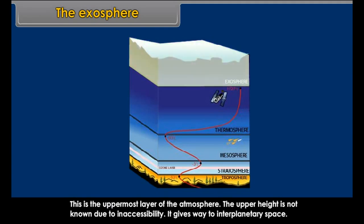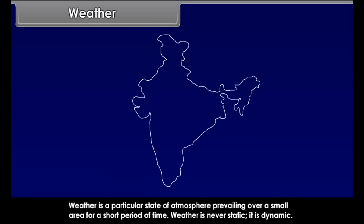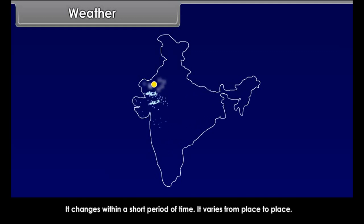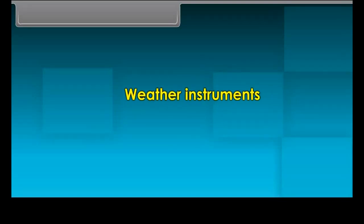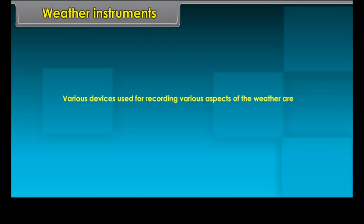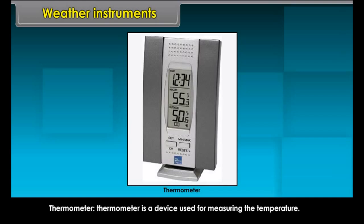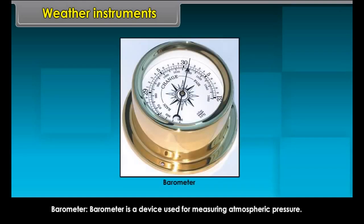The ionosphere extends above the mesosphere up to a height of about 400 km. The radio waves transmitted from Earth are reflected back by this layer, thus it helps in radio transmission. It is a zone of ion gas, electrons and atoms. It helps the conduction of electricity in this layer and contains electrically charged particles called ions. The exosphere is the uppermost layer of the atmosphere. The upper height is not known due to inaccessibility. It gives way to interplanetary space.